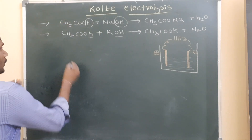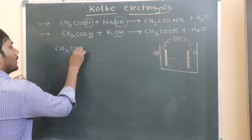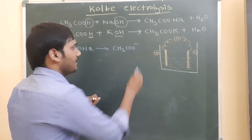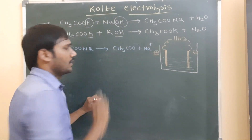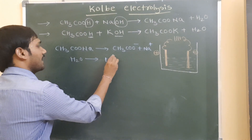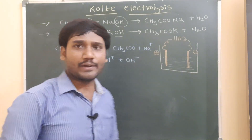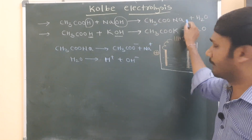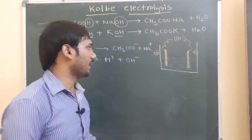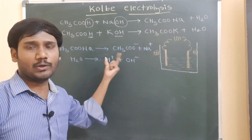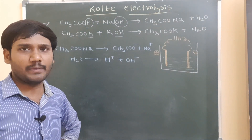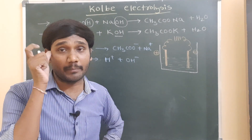The sodium salt of carboxylic acid splits into acetate ion (CH3COO-) and sodium ion (Na+). Water also splits into H+ ion and OH- ion. So totally we get four ions: CH3COO-, Na+, OH-, and H+. By the combination of these ions, we can prepare the alkanes.